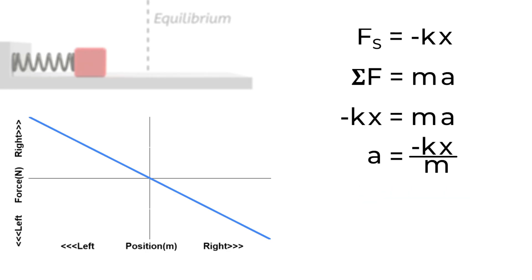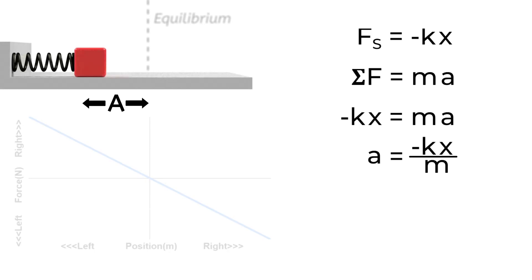The maximum acceleration of the block is going to occur when the block is the farthest away from equilibrium that it ever reaches, or what we'd call its maximum amplitude. So in order to solve for the maximum acceleration of the block, we need to take the maximum amplitude of the block and substitute that in as our position in solving for the acceleration of the block. And now we have a function for the maximum acceleration of the block.